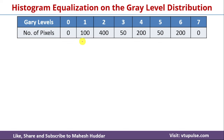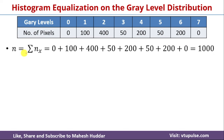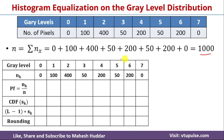First we need to calculate the total number of pixels, where n equals the summation of nk. That is 0 + 100 + 400 + 50 + 200 + 50 + 200 + 0, which equals 1000. So the total number of pixels in the given image is 1000. Next, we need to calculate the probability function, the cumulative distribution function, and then multiply the CDF by the number of levels minus 1, and round that value.